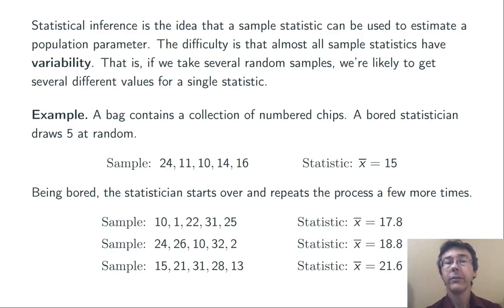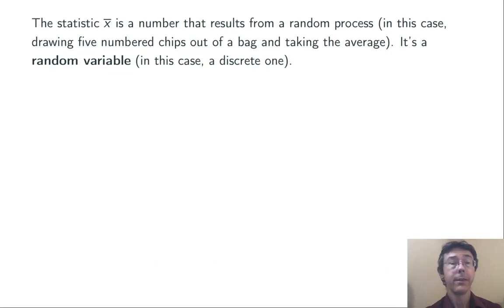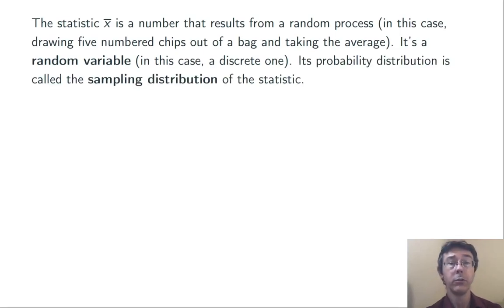So, this statistic is going to end up being a number that is a result of a random process. In other words, the statistic, in this case x-bar, is itself a random variable. And it's going to have a probability distribution, a description for all the possible values that it could take, and their probabilities.